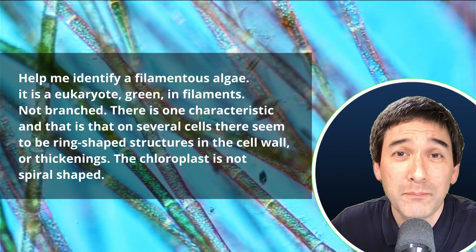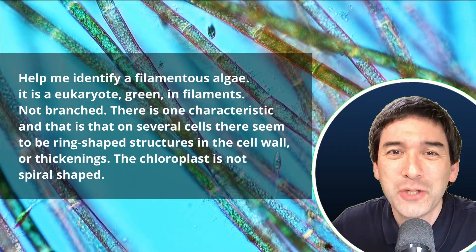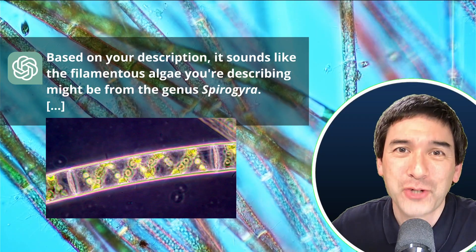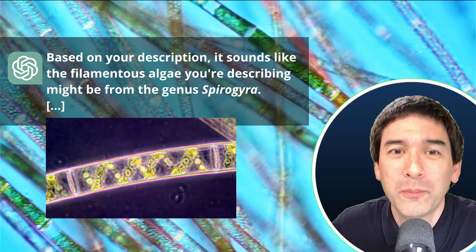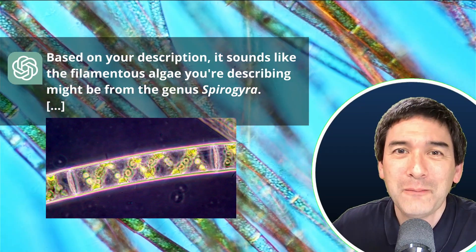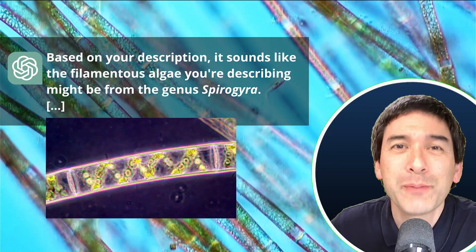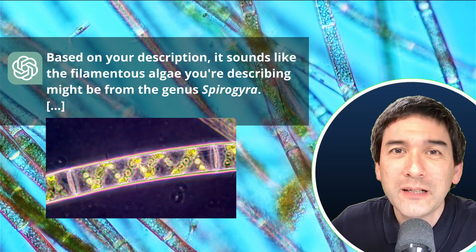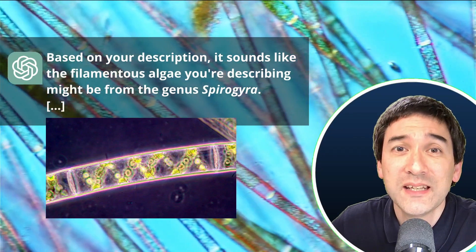And then I typed it in and indeed it did not take very long. And what did ChatGPT suggest? Well, exactly. It was actually spirogyra. So based on your description, it sounds like the filamentous algae you're describing might be a form of the genus spirogyra. No, it's not here. I did include a picture. And in the picture you can clearly see that it looks very different because spirogyra has a spiral-shaped chloroplast, which we do not have here. And it completely ignored those ring-like cells or those ring-like thickenings in some of the cells.